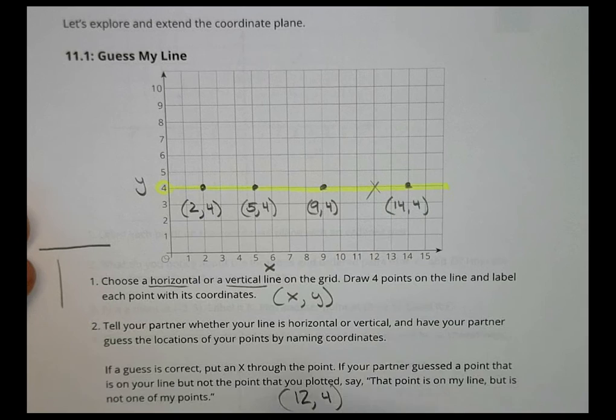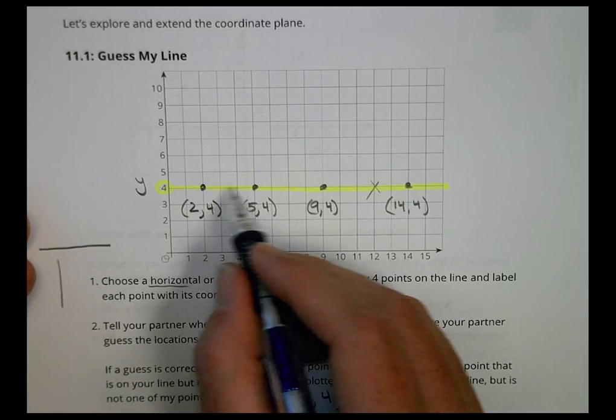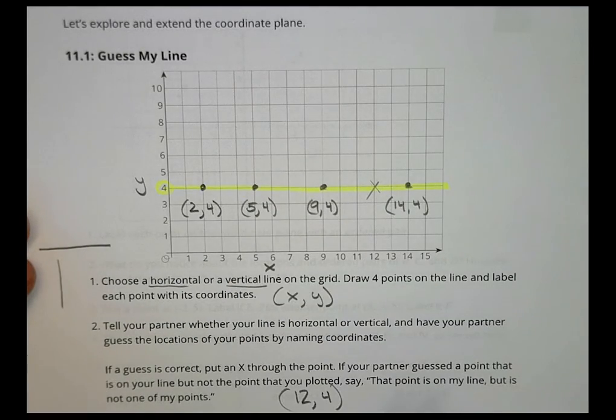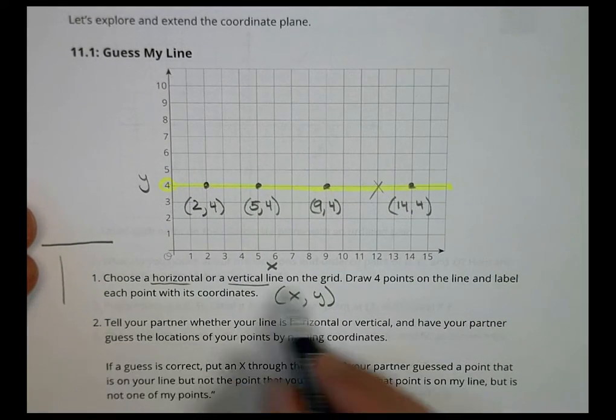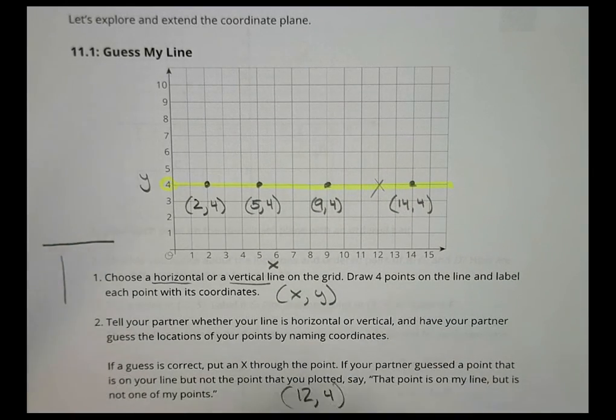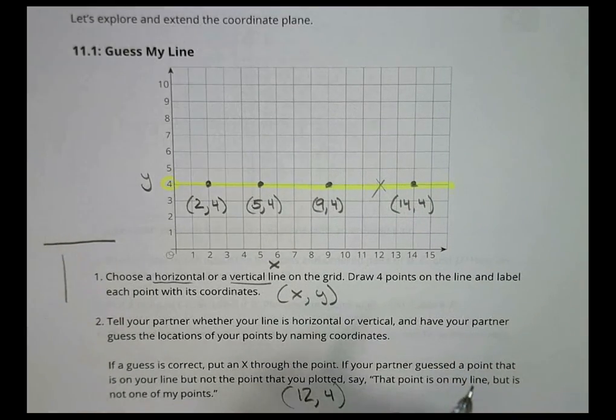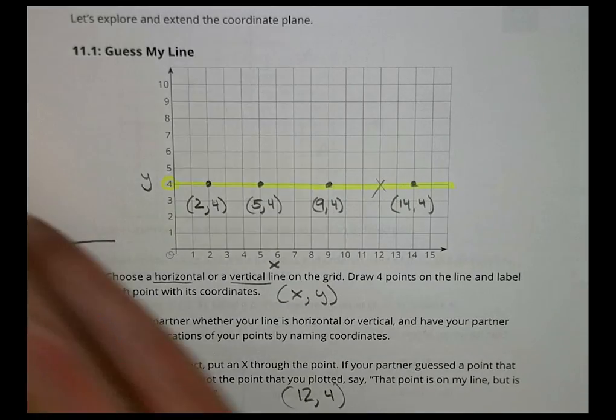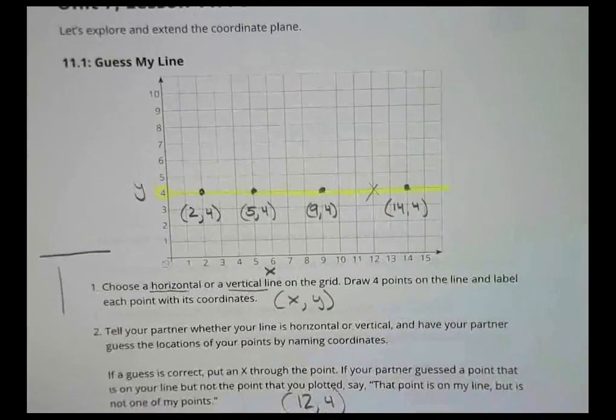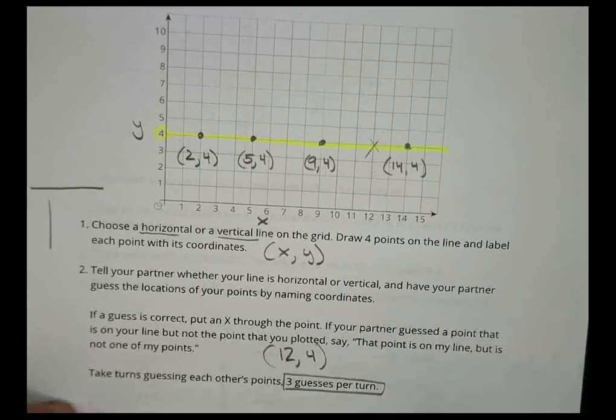After that, the other person takes turns and they're going to guess too. Everybody gets three guesses per turn. The goal here is to see if you can find the points that your partner chose, whether it's on a horizontal line or a vertical line. Don't tell your partner what your points are, just let it be a secret and let them guess three guesses at a time until someone's able to select them all the right way. Let's take a look at the next activity.